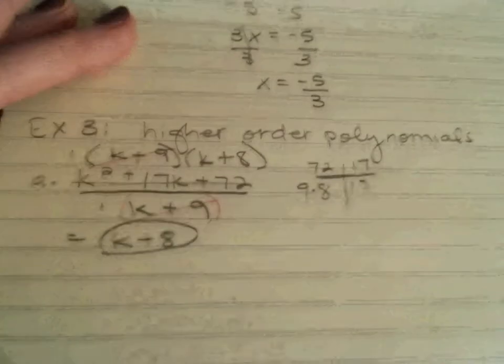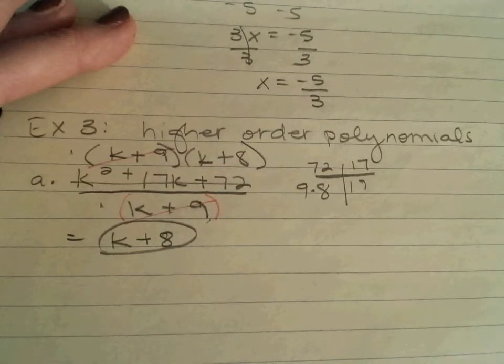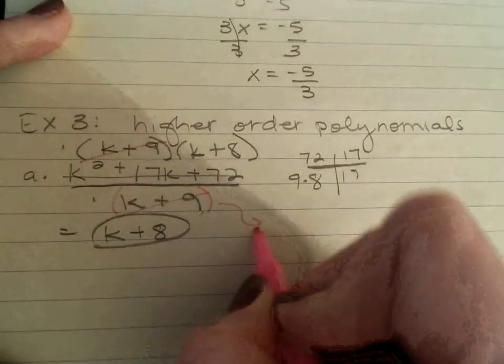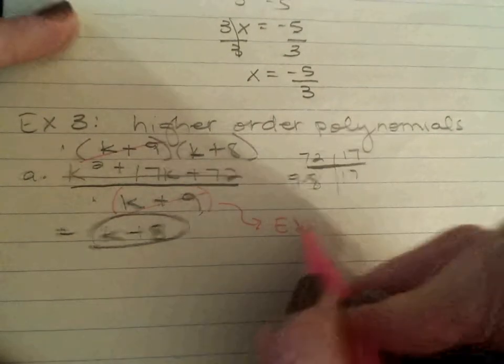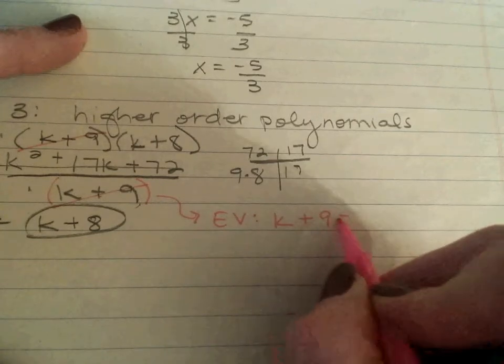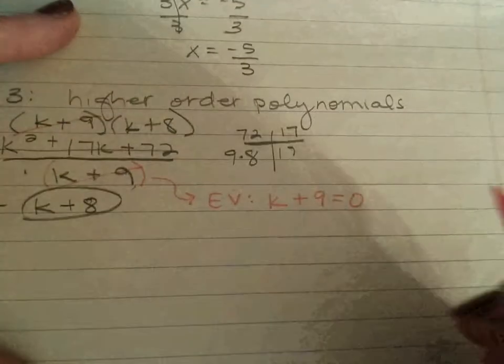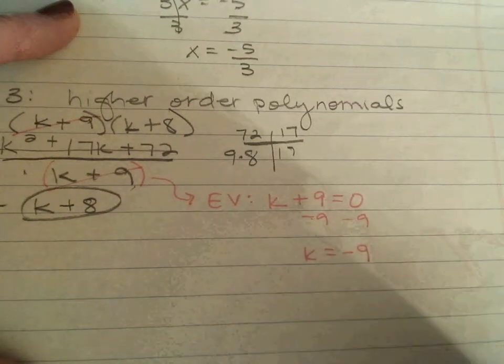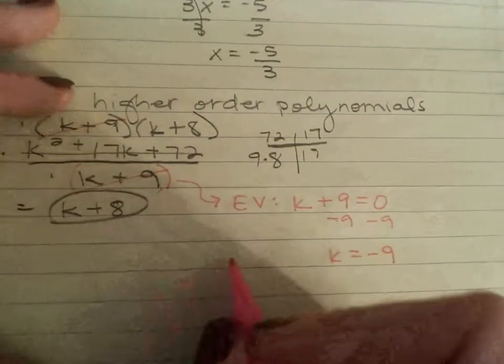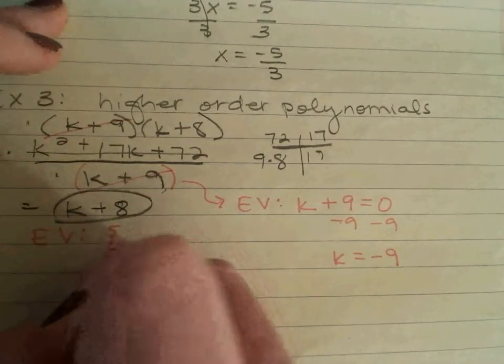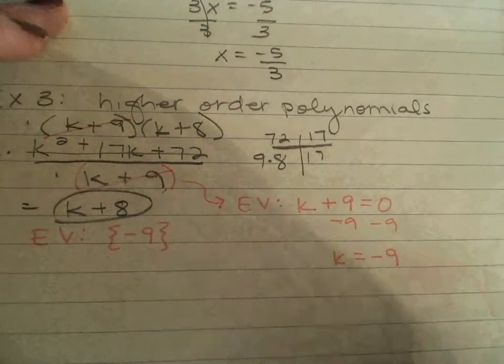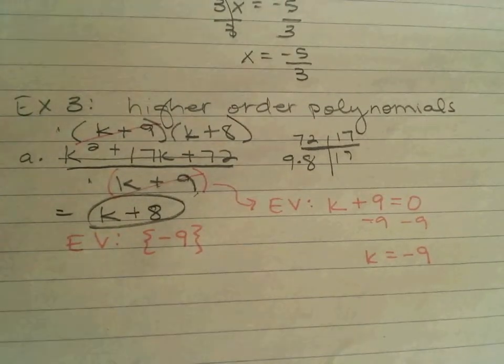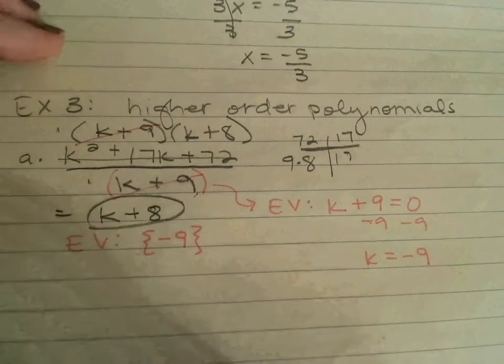But, don't forget, this is where it's extra important, to look back at your original denominator to figure out what are your excluded values. What makes k plus 9 equals 0? Not hard, right? Just subtract the 9. So, k equals negative 9. So, I'm going to write my excluded value negative 9. Don't even try and put a negative 9 in for k. It's going to make the denominator 0.